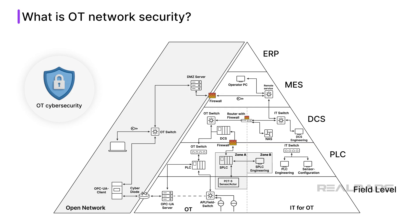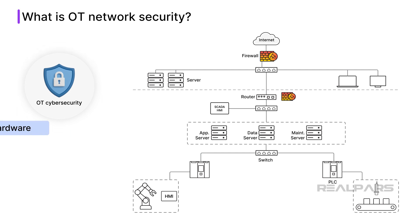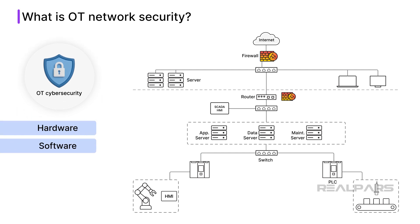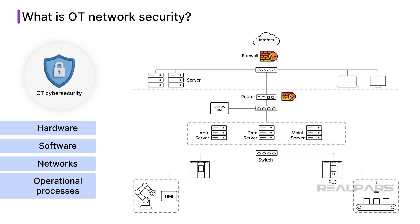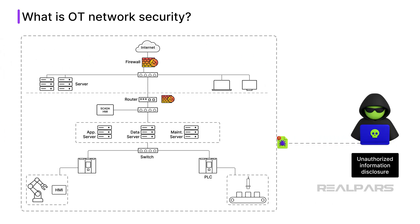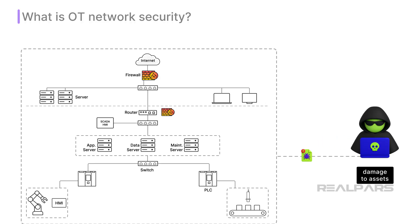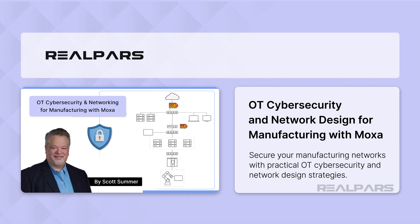OT cybersecurity can be understood as the protection of industrial systems, including hardware, software, networks, and operational processes, from threats that could compromise safety, availability, integrity, or data confidentiality. These threats can result in unauthorized information disclosure, theft, or damage to assets, as well as disruption or misdirection of the services they support.